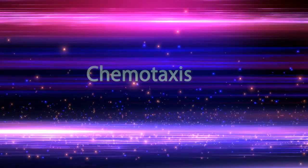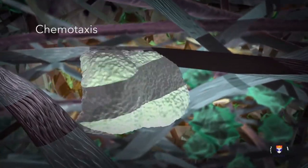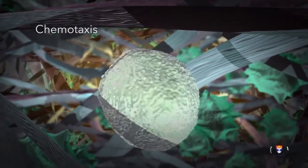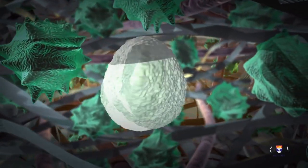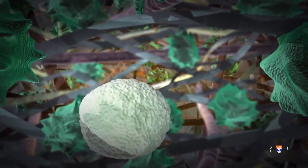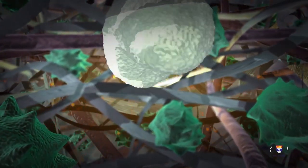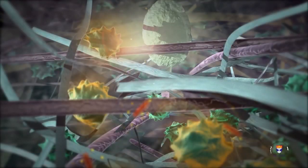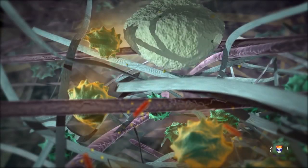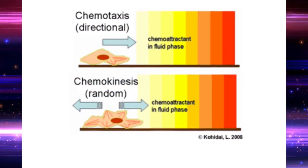Chemotaxis means locomotion oriented along a chemical gradient. Both exogenous and endogenous substances can be chemotactic for leukocytes, such as bacterial agents, cytokines, and components of the complement system. Those chemotactic molecules bind to specific cell surface receptors. The direction of such movement is specified by a higher density of chemokine receptors at the leading edge of the cell, which induces polymerization of actin in the leading edge.